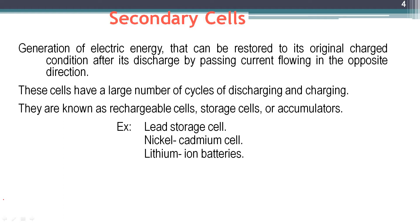Examples of secondary cells include the lead storage cell (lead acid battery), nickel cadmium cells, and lithium ion batteries. These batteries can be discharged and charged through many cycles and have a longer shelf life compared to primary batteries. Secondary batteries can be used for many cycles of discharging and charging.